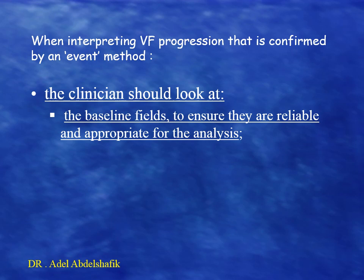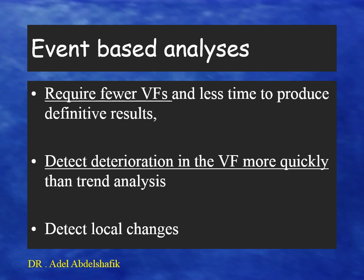When interpreting visual field progression confirmed by an event method, the clinician should look at the baseline fields to ensure they are reliable and appropriate for analysis. Event-based analysis requires fewer visual fields, so it takes less time to produce definitive results, and it detects deterioration more quickly than trend analysis. It also detects local changes in specific areas of the field.